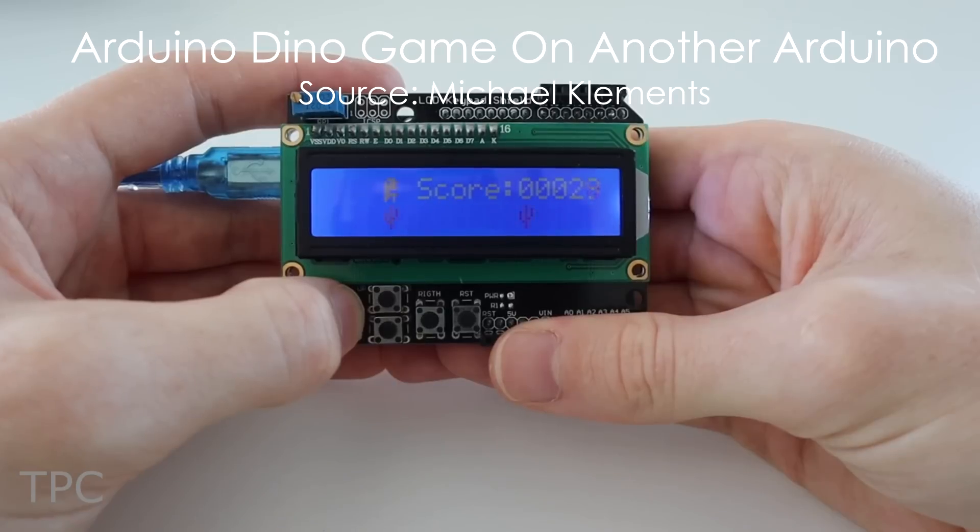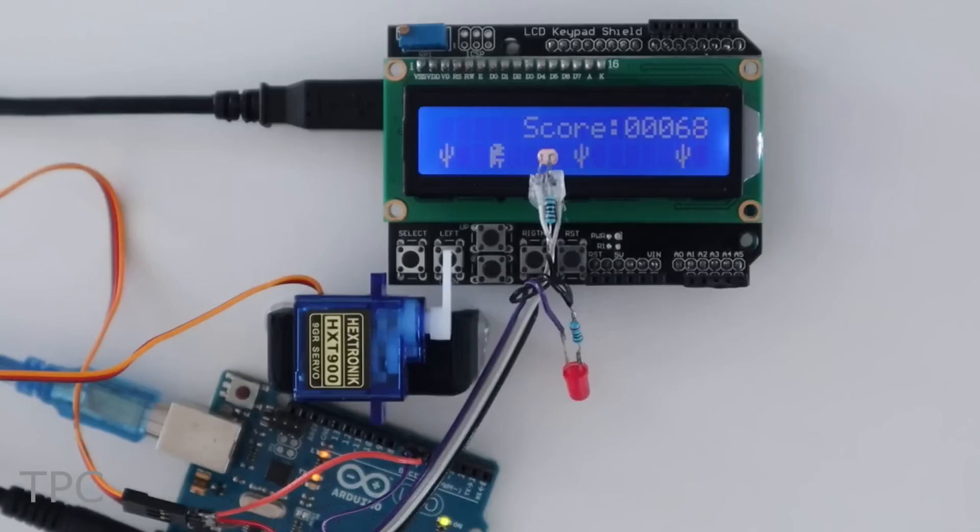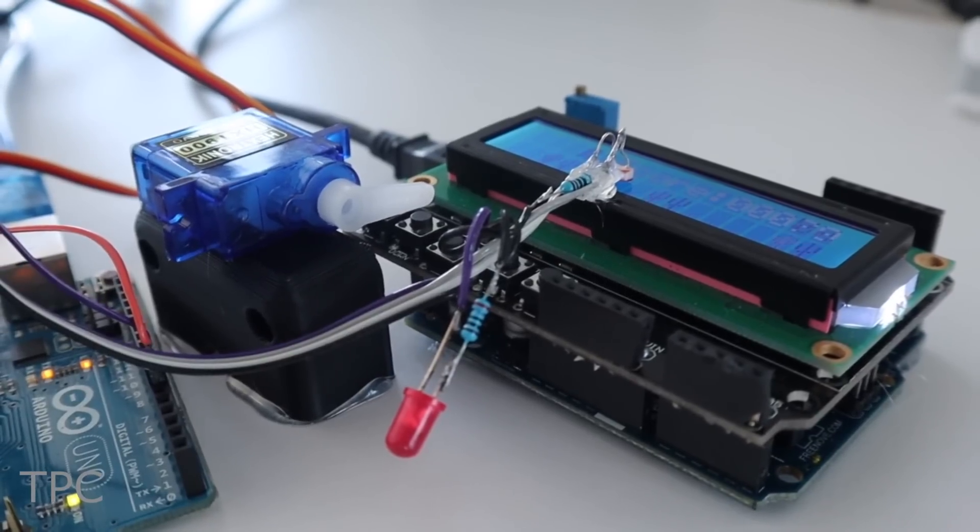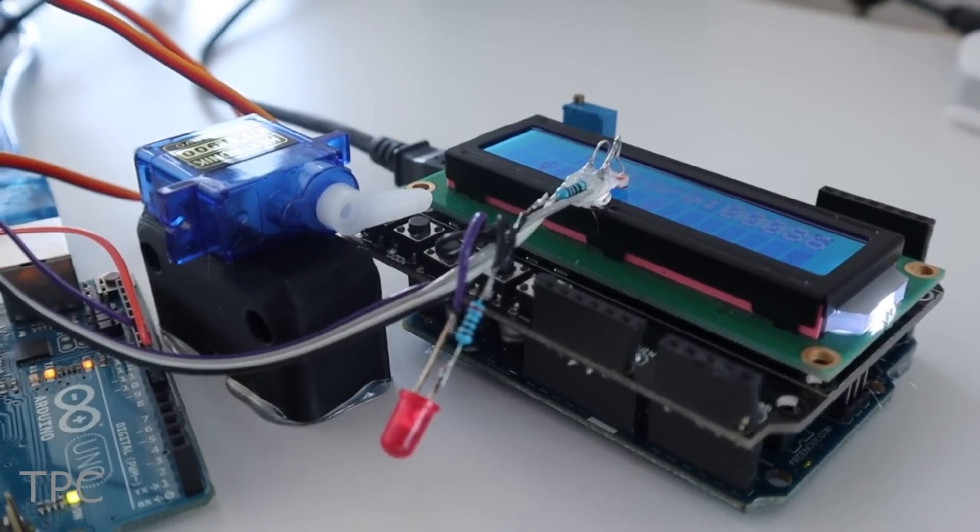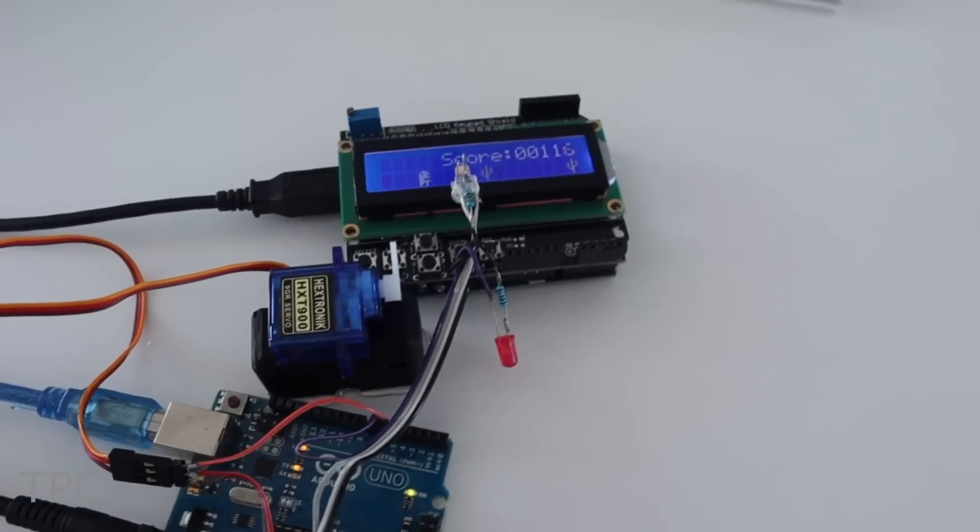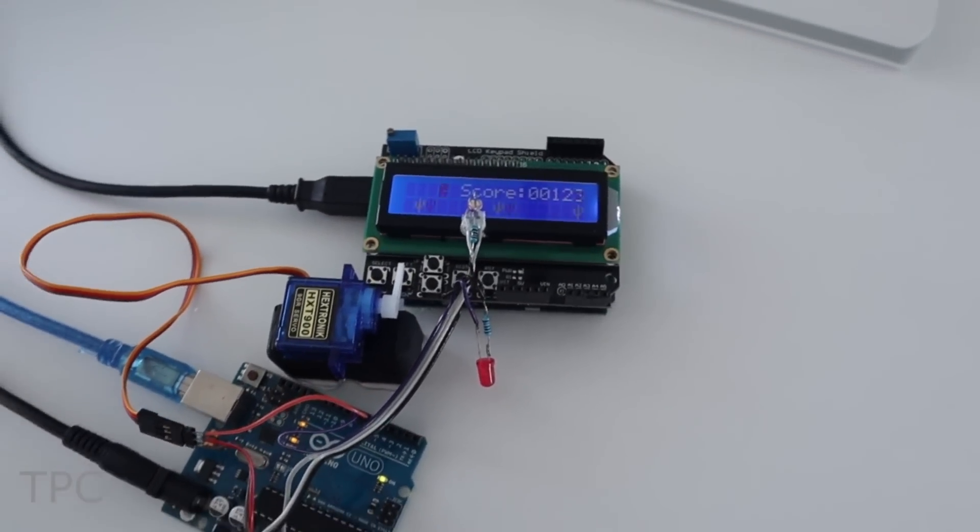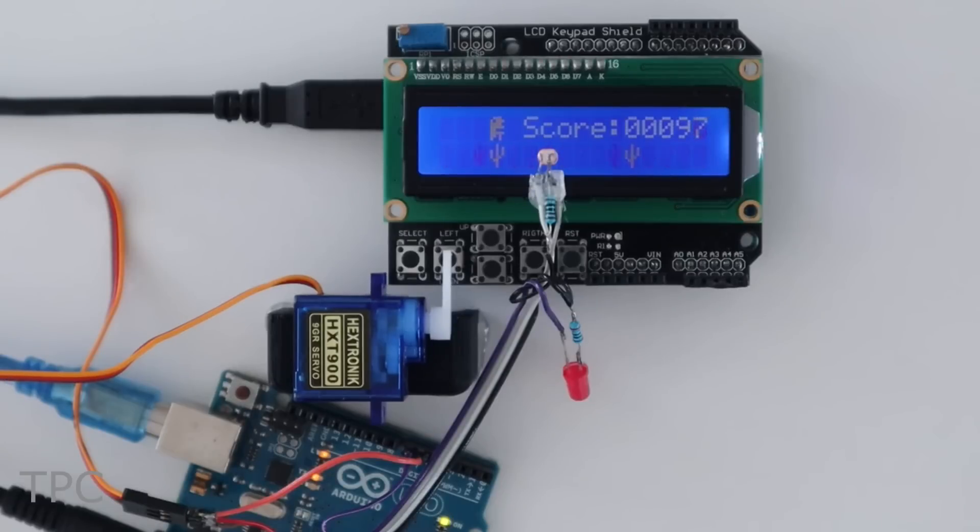You might have seen people using an Arduino to automate playing the Chrome Dino game in their browser. But this one takes the experience a bit further, where one Arduino plays the Chrome Dino game on another Arduino. The first Arduino runs a simple version of the game, which produces a continuous stream of randomly spaced cactuses at an increasing speed and closer together.